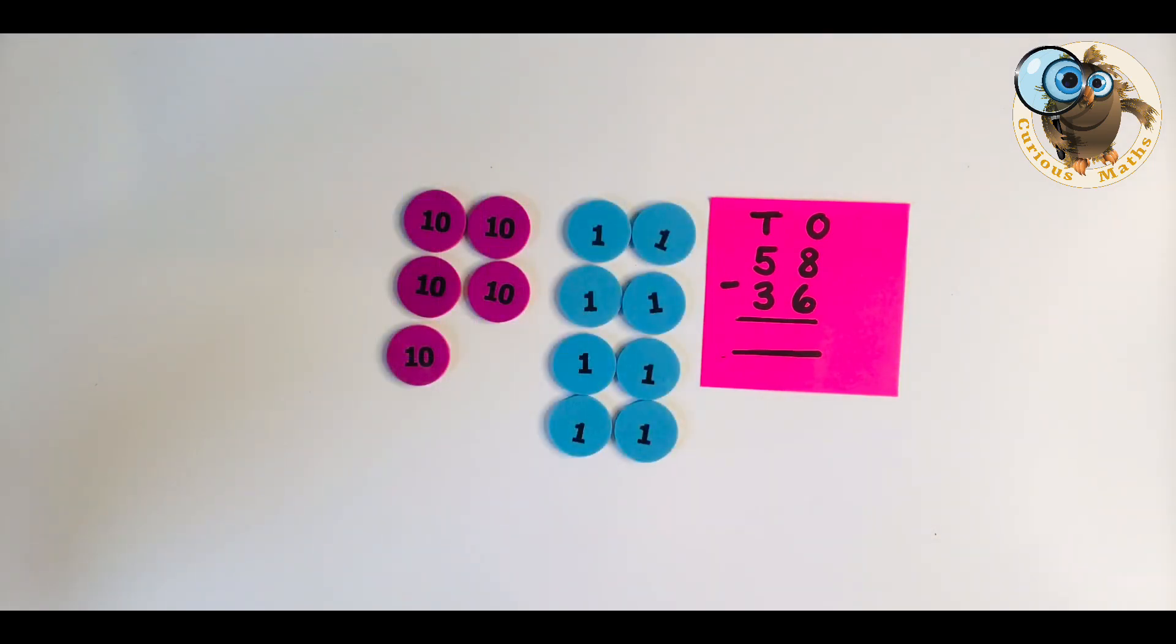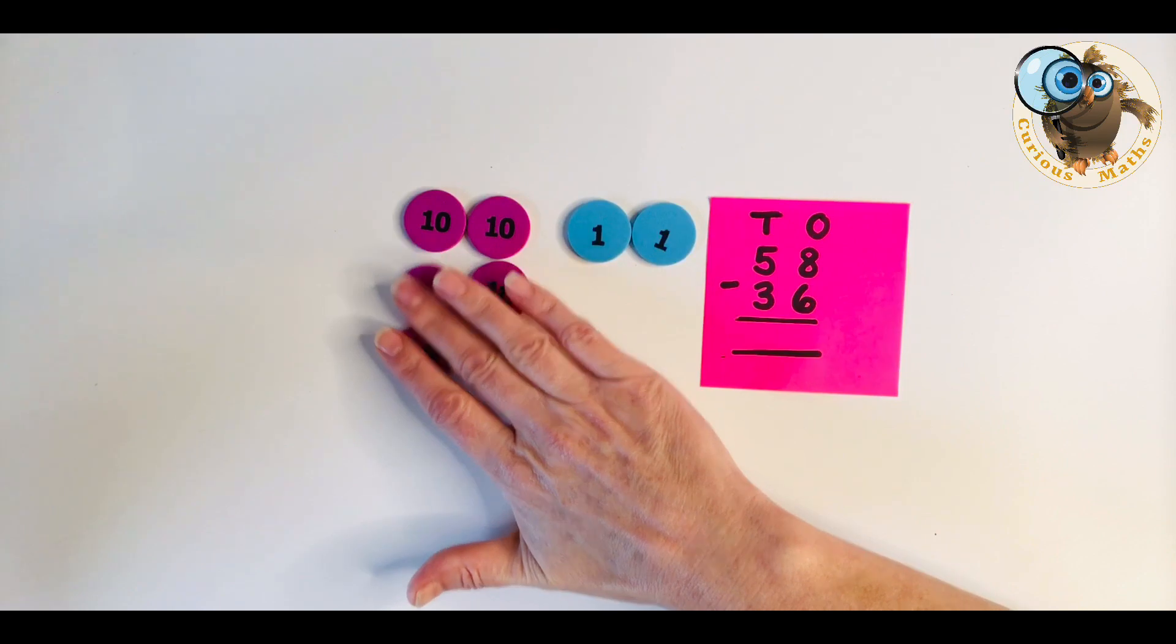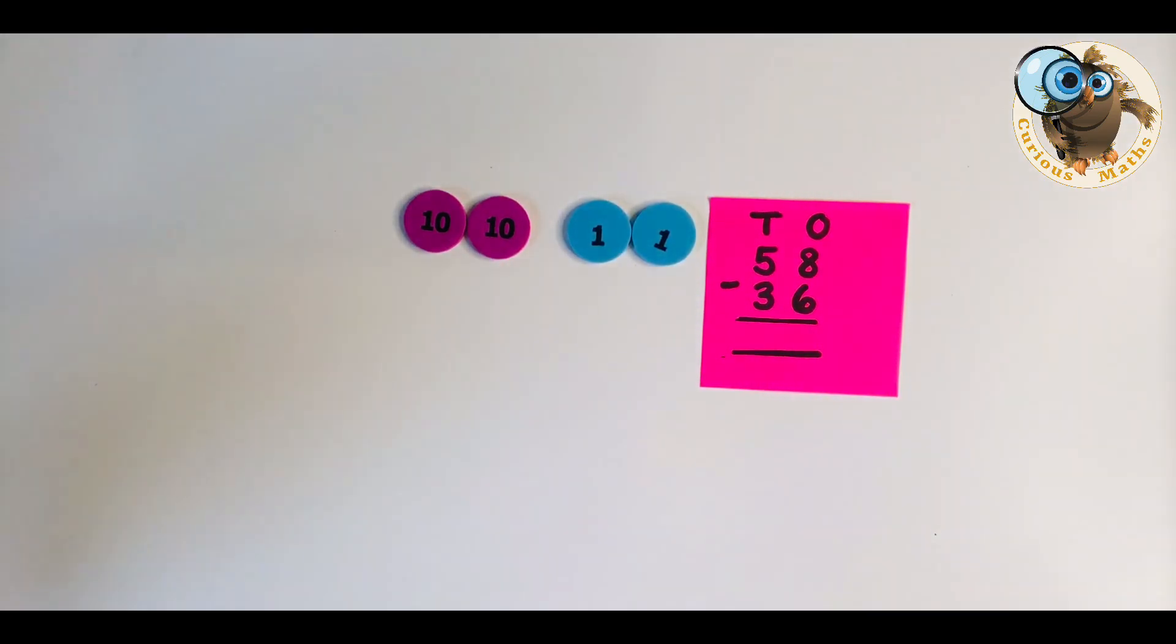This build is using place value counters and you use it in exactly the same way. We would take our six ones from our eight ones and our three tens from our five tens and we'll be left with our answer of 22.